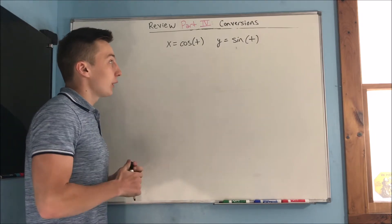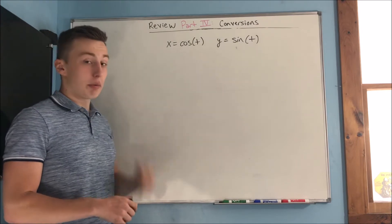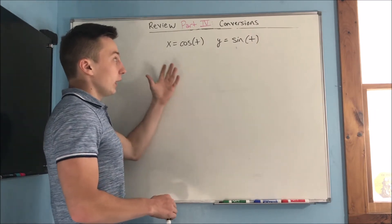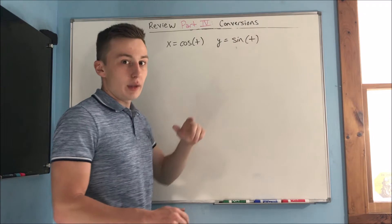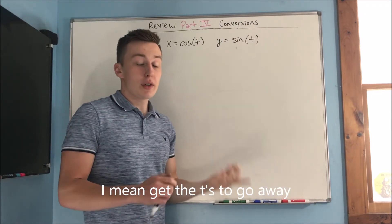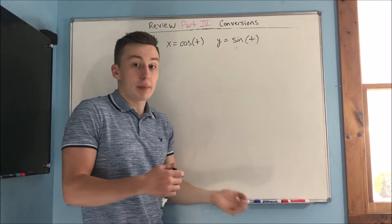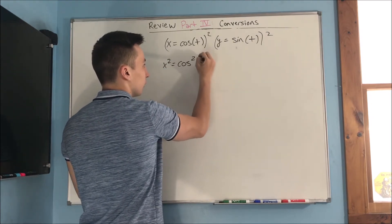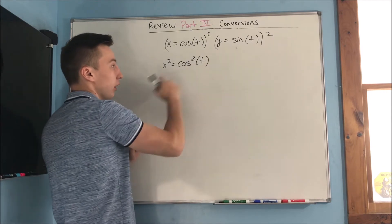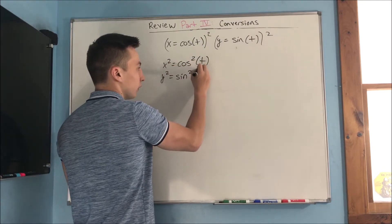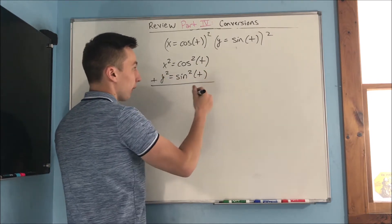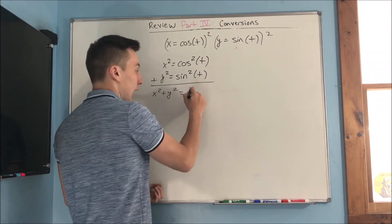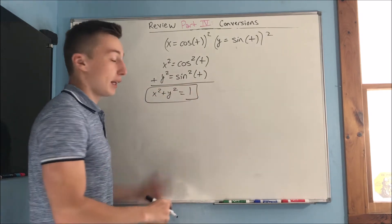We have x equals cosine t, y equals sine t, and we want to eliminate the parameter. You see a cosine and a sine — you can think of cosine squared plus sine squared. By squaring each equation, you get x squared equals cosine squared t, and y squared equals sine squared t. Adding these up, x squared plus y squared equals cosine squared plus sine squared, which is one. The parameter has gone away and you end up with x squared plus y squared equals one.